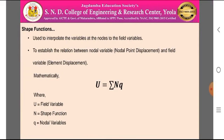What are shape functions? These are the functions which are used to interpolate the variables at nodes to the field variables. We can also say they are used to establish the relation between nodal variables and field variables. Mathematically, it is written as u = Σ N·q, where u is the field variable, N is the shape function, and q is the nodal variable.